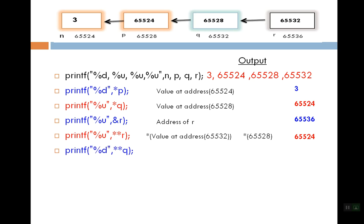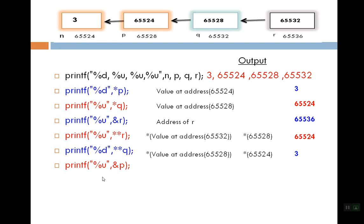After that, the printed statement is star star q. Star q means value-at-address, and q's value is 65528. So at 65528 we see 65524. Then one more star: value-at-address 65524 gives 3. So the output is 3. The next statement is printf %u, &p. Here & is the address-of operator, so we print the address of p. The address of p is 65528, so the output here is 65528.